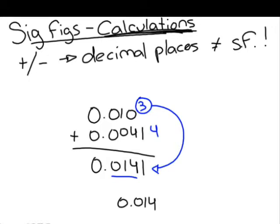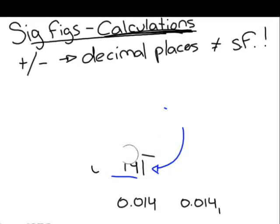In other words, your answer will have the same number of decimal places as your value with the least number of decimal places. So, in this case, three. You can keep track of the one as long as you lower it, as I've done there.